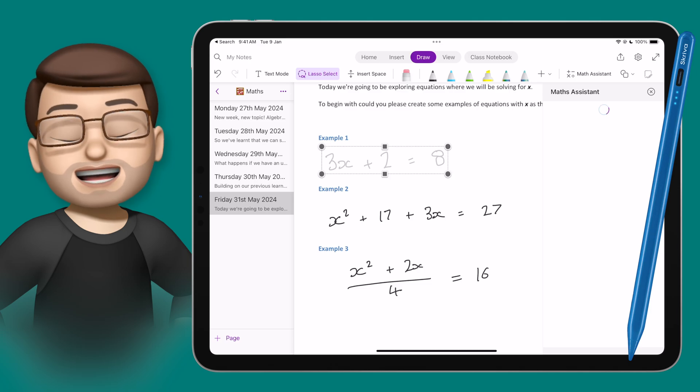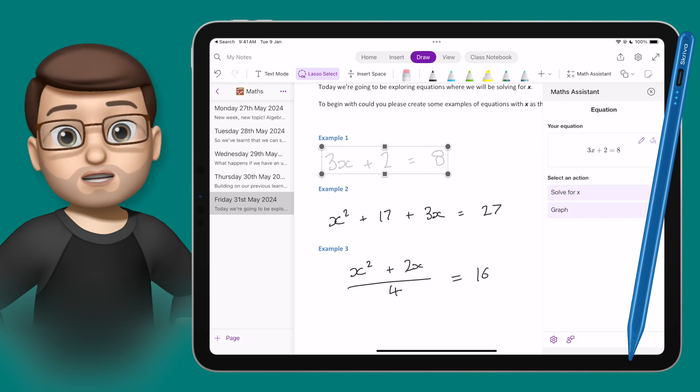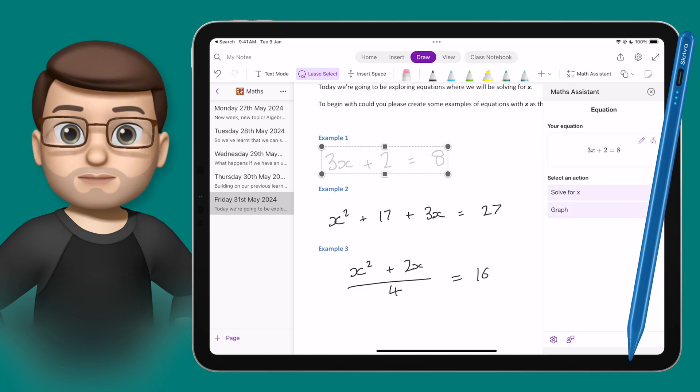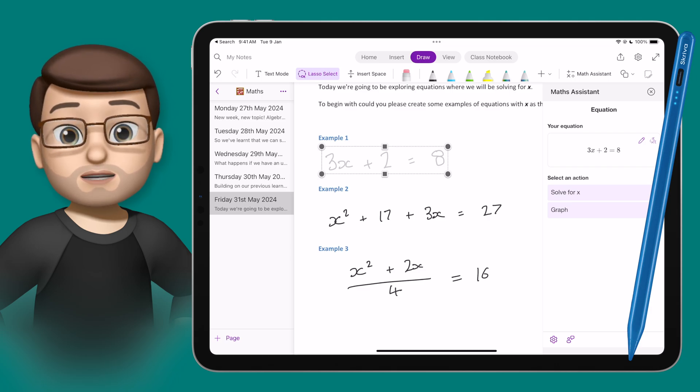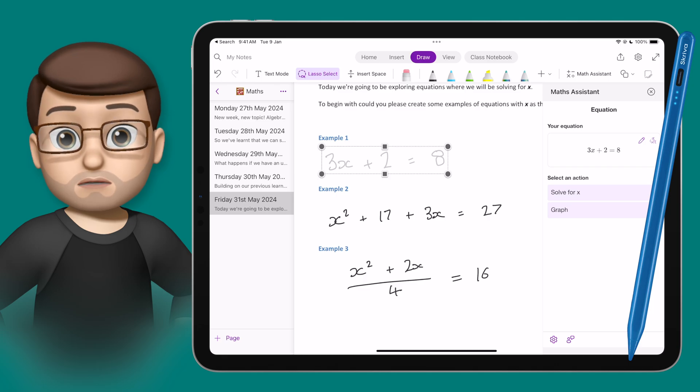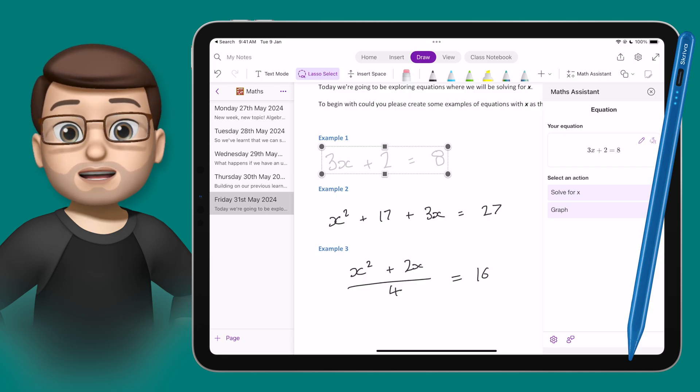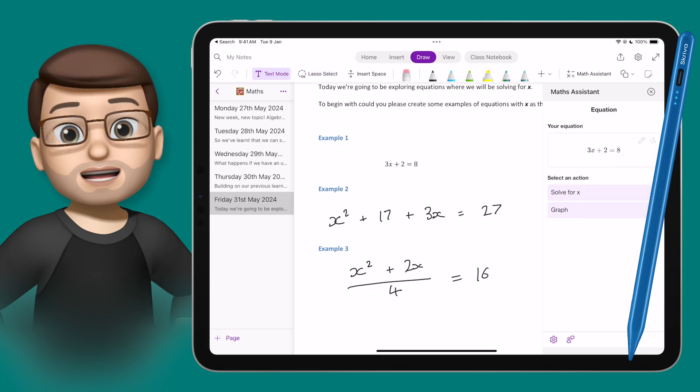It will take a second to load, and then you'll see immediately it's converted your handwriting into a written expression. In this instance, it's actually converted it perfectly, there's no mistakes, but we'll have a look in a second at what to do if there is a mistake. For this one, though, I'm simply going to press this tiny button in the top right corner, and that will replace my handwriting with the typed expression on my document.